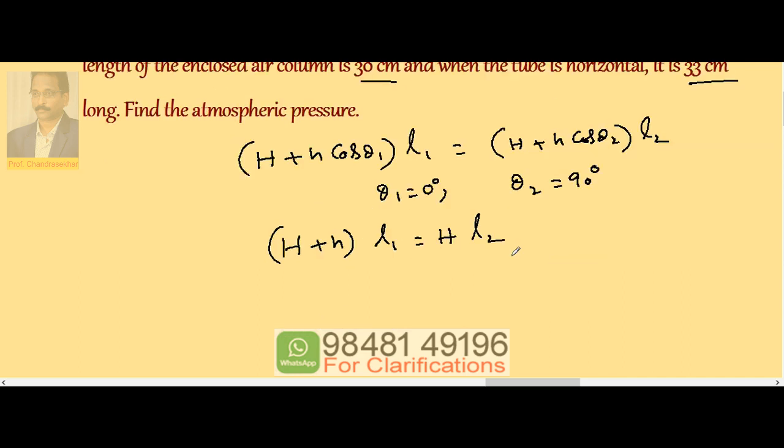Now let us substitute the values. Capital H is unknown, small h is 7.5. L1 is 30, capital H into 33. So with 3, this is 10 times, this is 11 times.